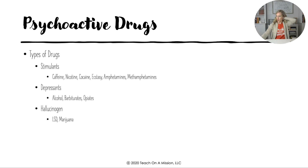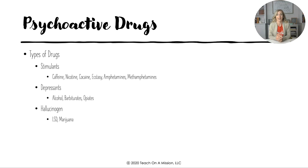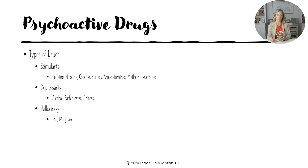Now psychoactive drugs. Stimulants increase brain activity — on an FRQ, do not just say stimulants 'stimulate' the brain, as that won't earn points. Examples include caffeine, nicotine, cocaine, ecstasy, amphetamines, and methamphetamines — all of which increase brain activity significantly. Make sure you know how each interacts at the neurotransmitter level — that is super important to study.